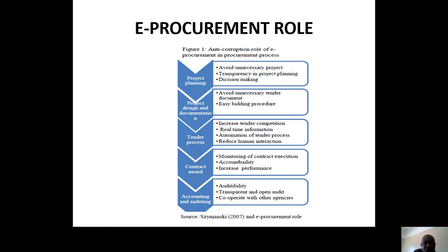E-Procurement's role: it avoids unnecessary projects, brings transparency in planning and decision making. Project and design documentation avoids unnecessary tender documents, and it makes for easy bidding procedures. In the tender process, it increases tender competition, provides real-time information, and reduces human interaction — in other words, reducing corruption. For contract award, it enables monitoring of contract execution, accountability, and increased performance.